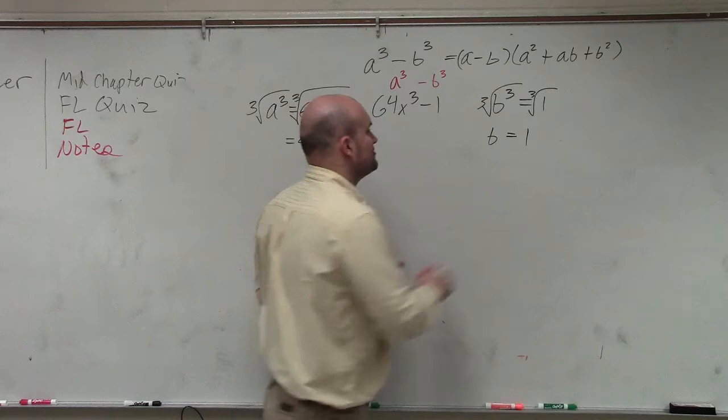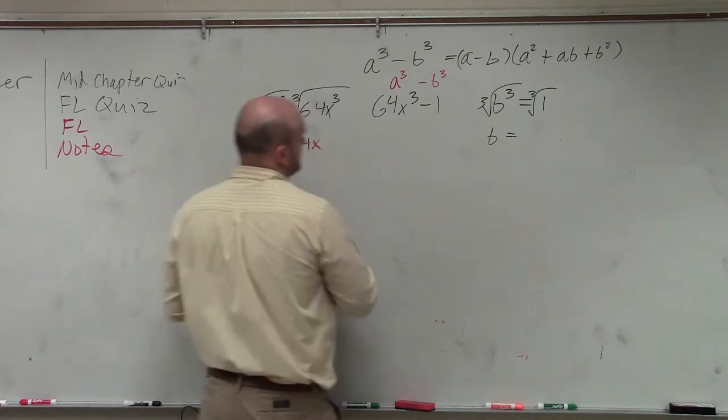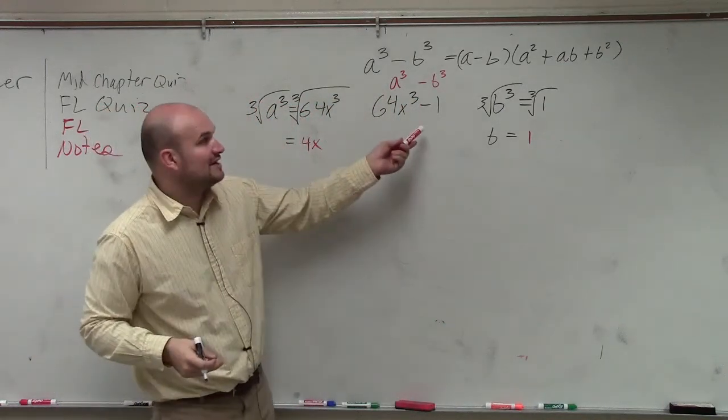Now, in this one, instead of using parentheses, I'll use a little color code. How about we do 4x and 1, OK? Same thing I just wrote. So now, we're just going to factor this out.